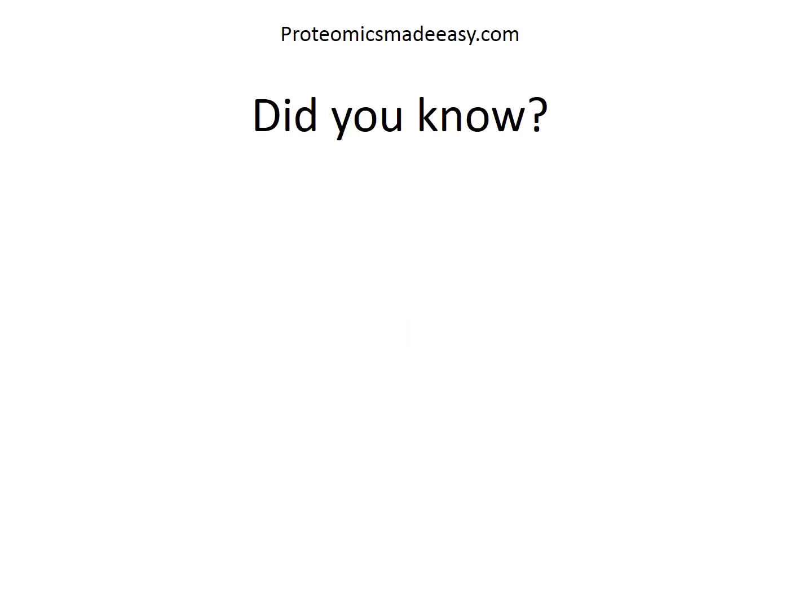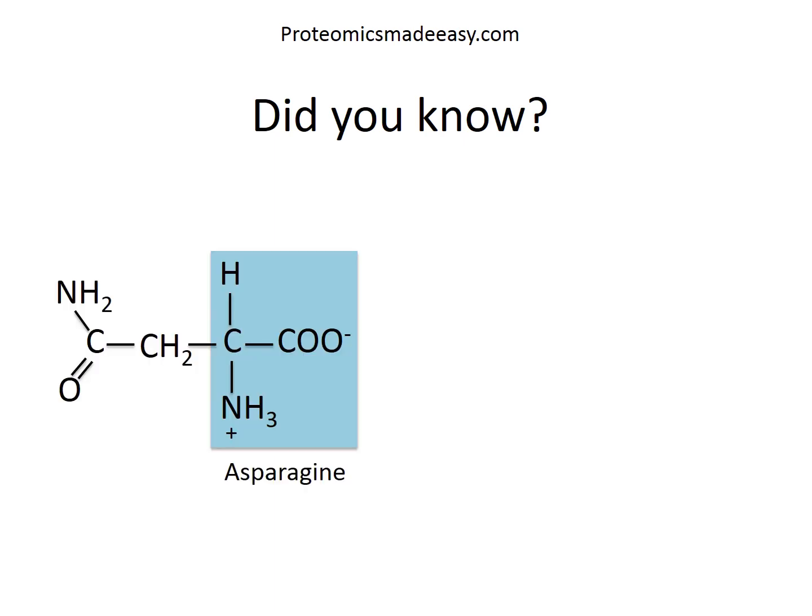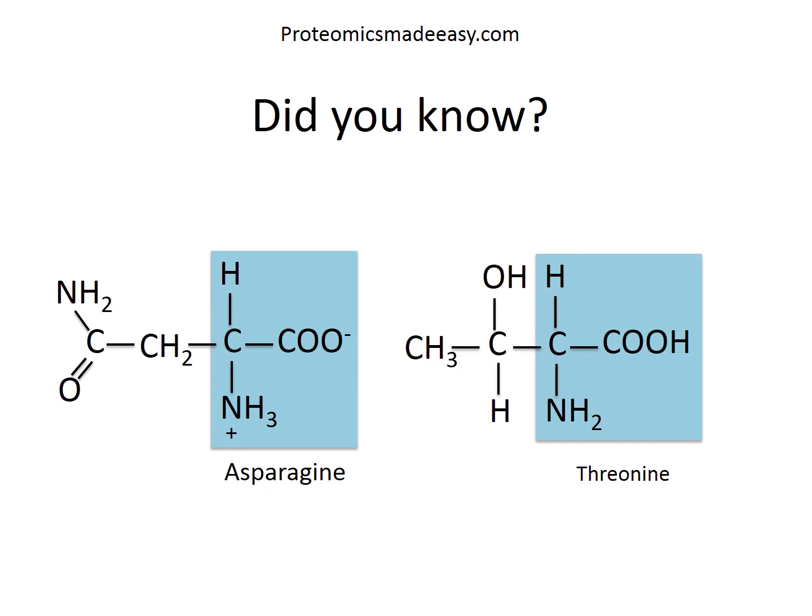Before we go into the details, let's talk a little about the history of amino acids. Did you know that the first amino acid discovered was asparagine? It was isolated from asparagus in 1806. The most recently discovered amino acid is threonine — it was identified in 1935. It is quite interesting that it took almost more than 100 years to discover all 20 standard amino acids.